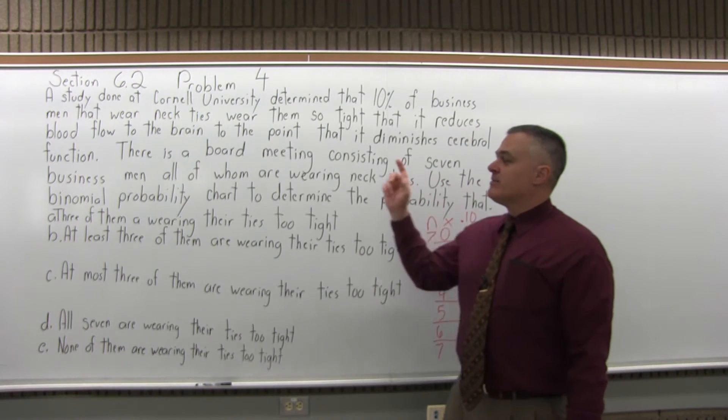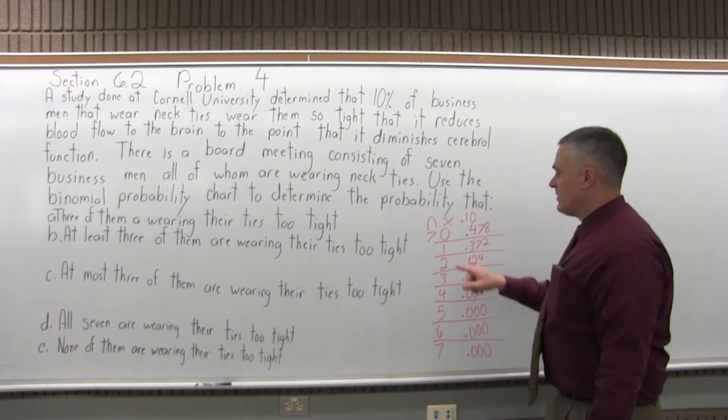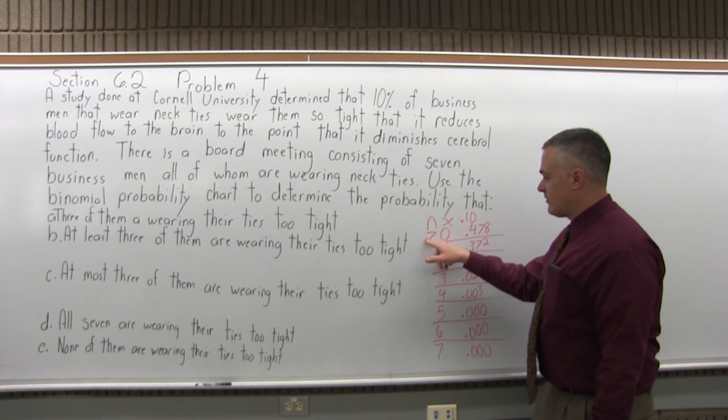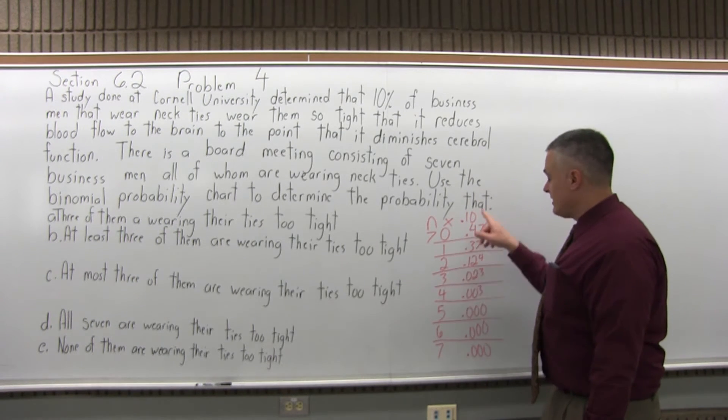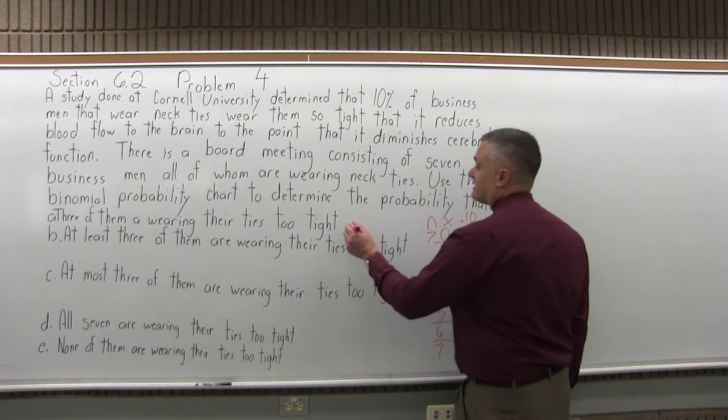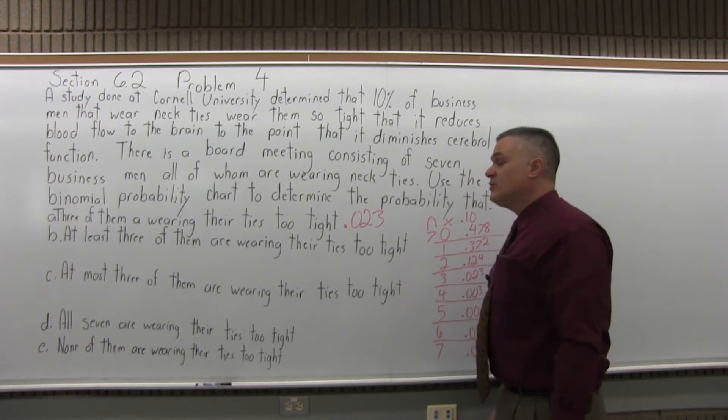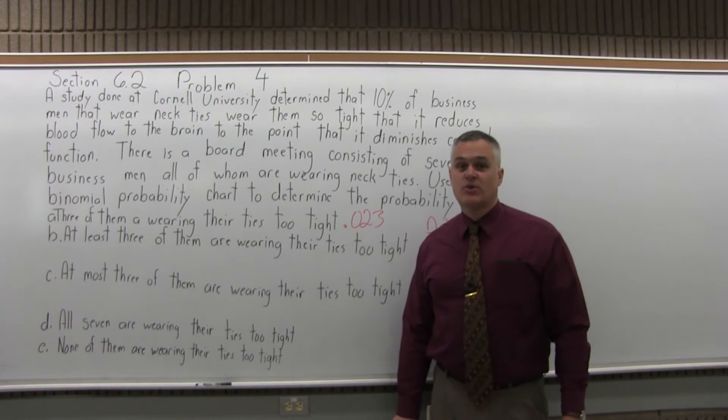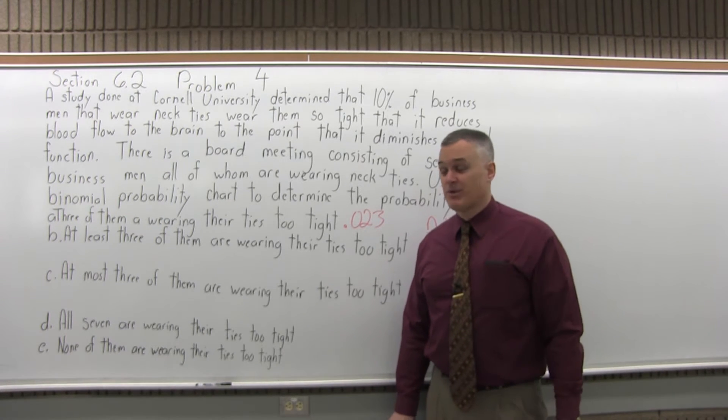Now, let's go back to part A. Find the probability that three of these businessmen are wearing their neckties too tight. We have seven for our N, our number of trials, we want to go to X is three, three successes, and under the 10% column it says .023. That's the answer for A, .023. It's about a 2% to 2.5% probability that three out of the seven businessmen have their ties on so tight they can't really think properly.